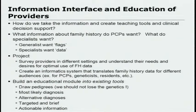On information interface and education of providers and patients, the group was interested not just in delivering information but also in delivering an educational platform as part of family history gathering. A key hypothesis was that generalists just want red flags, whereas specialists want more detailed information about patient history, genetics, and genomics. The VA has already begun surveying providers in different settings to understand their needs. A more challenging aspect would be creating an informatics platform that translates family history data appropriately for the audience seeing it.